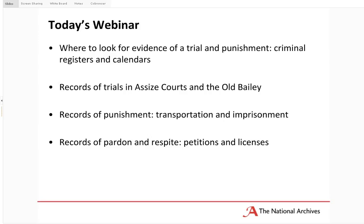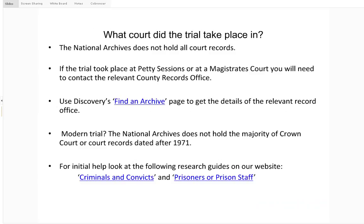Now, how do we work out where or when someone was tried? If you've established when someone was tried through something like an old newspaper article or a family story, you need to think about what court the trial took place in and whether the records would be here at the National Archives or elsewhere. It's worth noting that the National Archives does not hold all court records. We hold records of people tried in Assizes, and also registered and supporting documents of people tried at quarter sessions, which are quarterly local courts. However, if someone was tried at a petty sessions — a magistrate's court, summary jurisdiction court, or police court — those records will not be held at the National Archives.